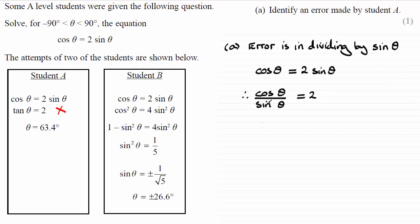Now cosine theta over sine theta isn't tan theta. Tan theta is sine theta over cosine theta. So we can say that that statement doesn't equal tan theta. And that means then that tan theta doesn't equal two.